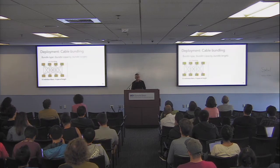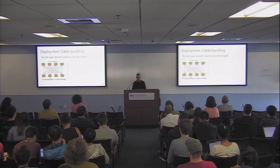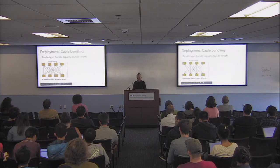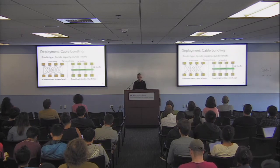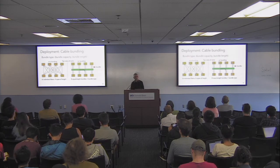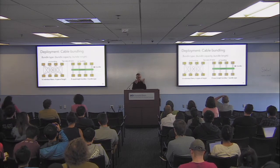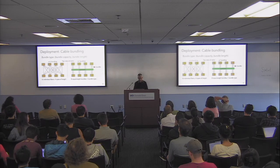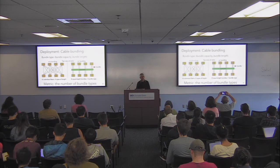Bundling is a measure of complexity. If I connect a topology with 16 individual fibers of four different types of lengths, that's four different bundle types. Whereas if I connect them with a device in between, it looks much easier to deploy. So another metric of complexity is the number of bundle types.